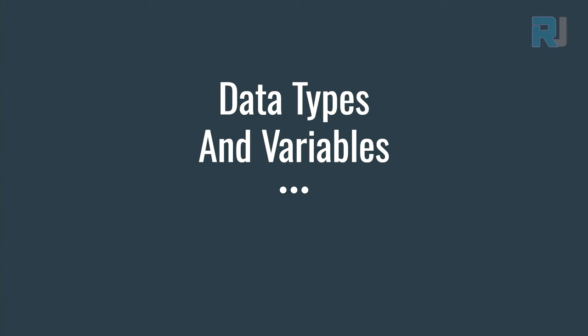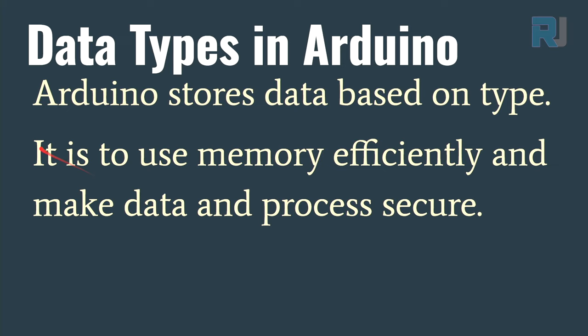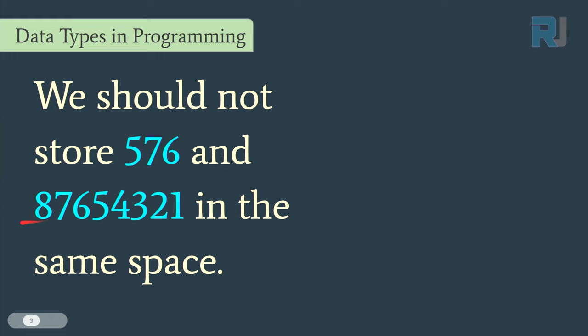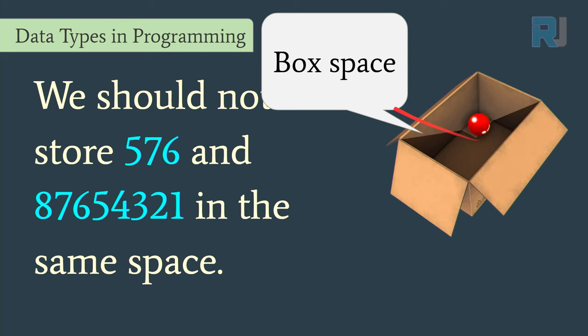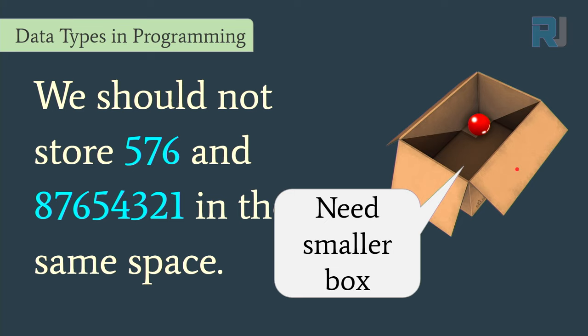Data types in programming — this applies to most programming contexts, but we are looking at the context of Arduino. Arduino stores data based on the type in order to use memory efficiently and make data processing secure. For example, we should not store a small number like 5 or 7 and a large number like 70,876,543,21 in the same space. If you look at a big box with a small ball inside, there is a lot of empty space — we need a smaller box. The same concept applies in programming.